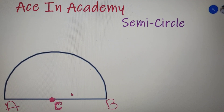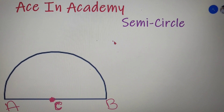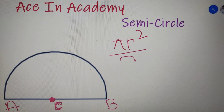The area of a semicircle is simply half that of a circle. So if the area of a circle is πr², then the area of a semicircle is πr² divided by 2.